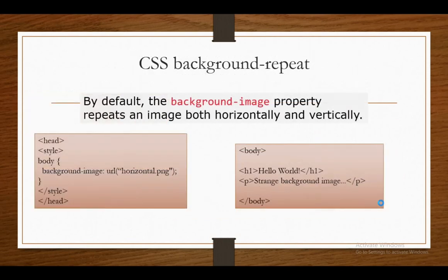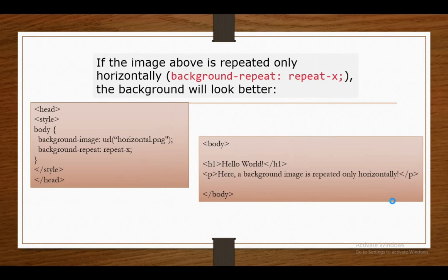Next we are going to see about CSS Background Repeat. By default, the background image property repeats an image both horizontally and vertically. Some images should be repeated only horizontally or vertically, otherwise they will look strange. Here is an example — the example above is horizontally repeated. If you don't want a messy image, you can use background-repeat: repeat-x. The background will look better. Repeat-x is for horizontal; repeat-y is for vertical. So if you want to repeat vertically, use repeat-y, and for horizontal use repeat-x.